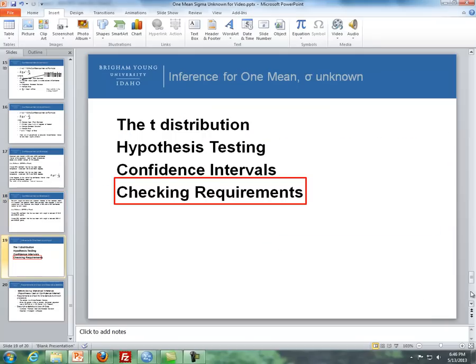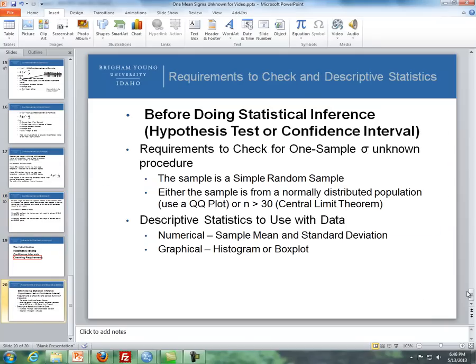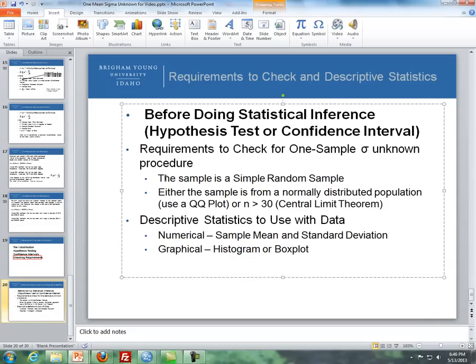Last thing I want to talk about is checking requirements. There's a couple requirements for doing a one mean or one sample standard deviation unknown. First of all, the sample is from a simple random sample, and that the sample is from a normally distributed population, so we use a QQ plot to check that, or the sample size is larger than 30. Now, also, we can do some descriptive statistics to use for the data. For the numerical, you typically would use a sample mean and a standard deviation, and for a graphical, you can use a histogram or a box plot.